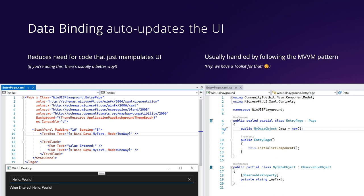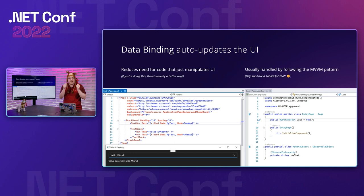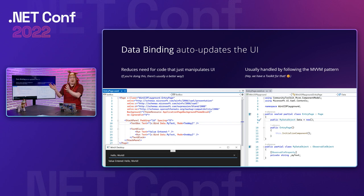Data binding is usually handled by the MVVM pattern — we have a toolkit for that and there are talks about it as well. Here I have a data object model with an observable property that has some text, and in XAML I use the x:Bind statement to connect to that object. Now when the user types in the text box, it automatically updates the object in code. The observable property means the UI doesn't constantly pull every property — instead, the object notifies the UI when a value changes, so it can efficiently update just that part.